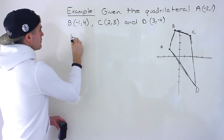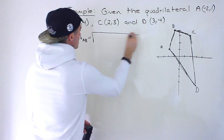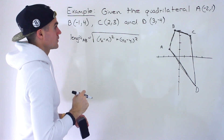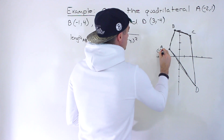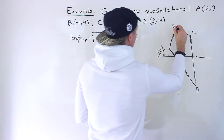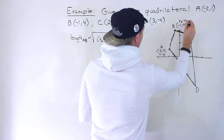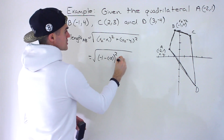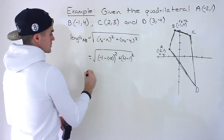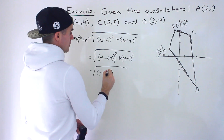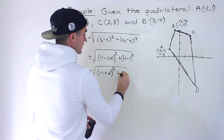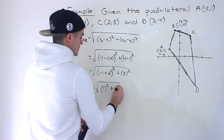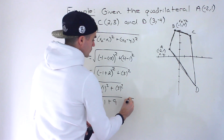Let's find the length of AB. Using the distance formula - square root of (x2 - x1)² + (y2 - y1)² - with A as (x1, y1) = (-2, 1) and B as (x2, y2) = (-1, 4), we get: square root of (-1 - (-2))² + (4 - 1)², which is √(1² + 3²) = √(1 + 9) = √10.